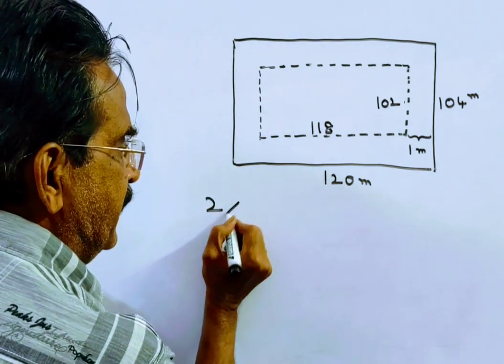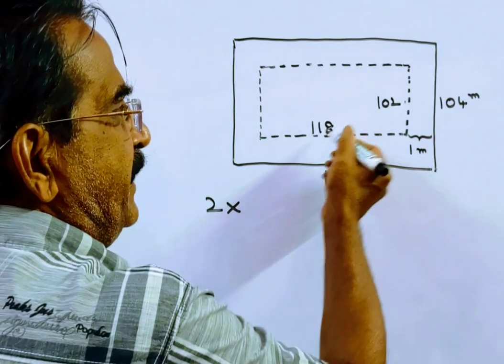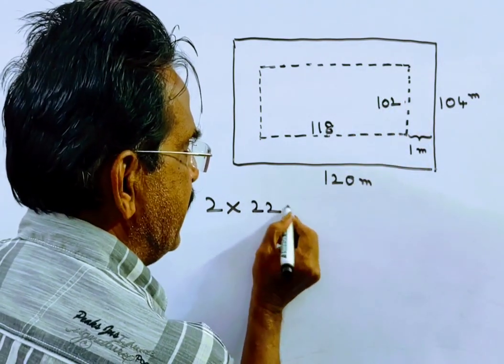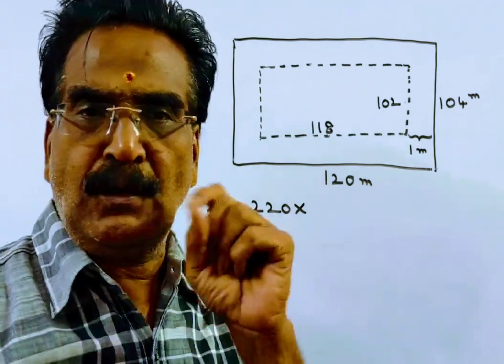So the perimeter of the inside rectangle is 118 plus 102, which is 220. 220 into the cost, 5 by 2 rupees.